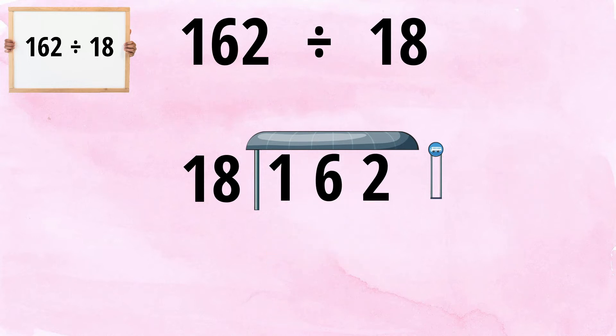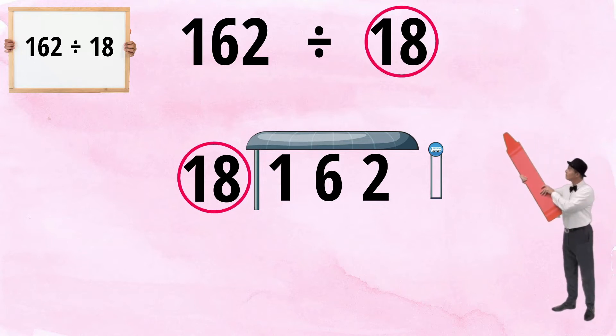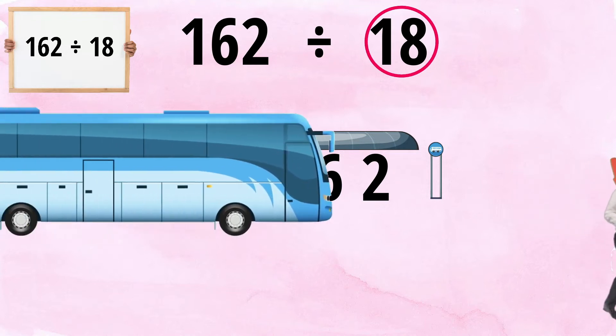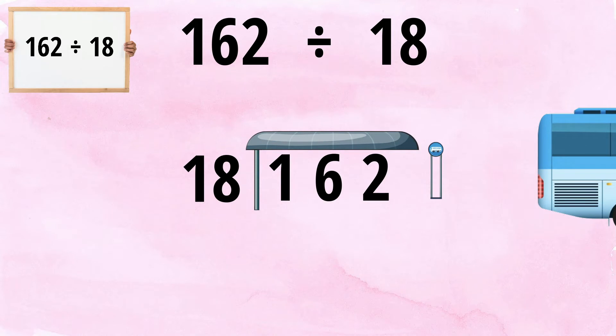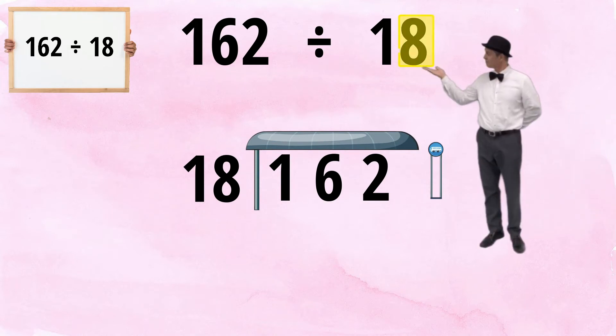What makes this question so tricky is that the divisor is above 12. I don't know my 18 times table. But I've noticed something. Something interesting about the divisor and the dividend.